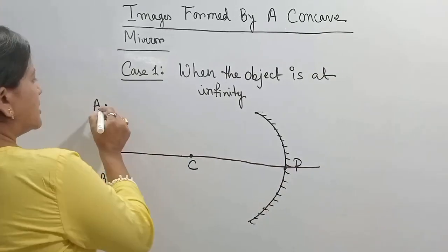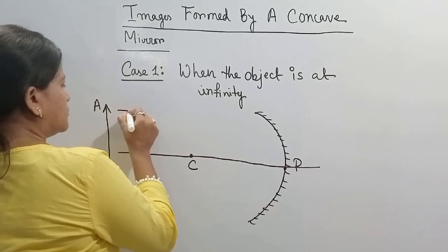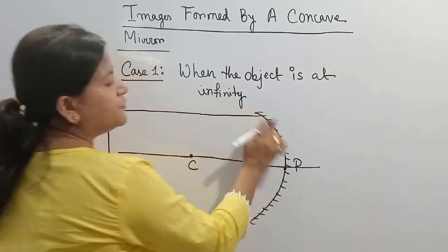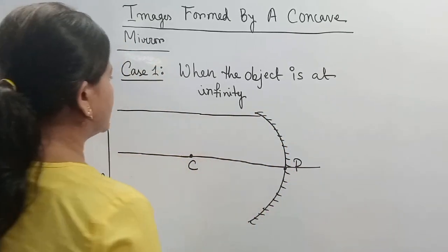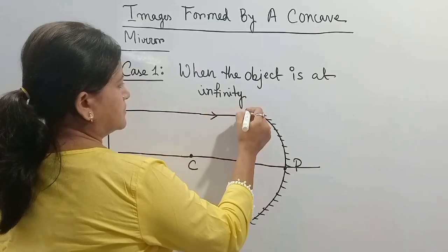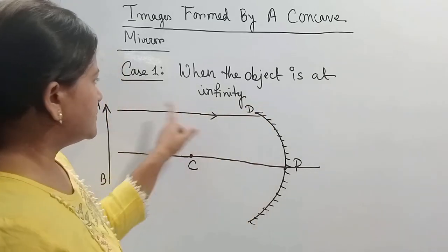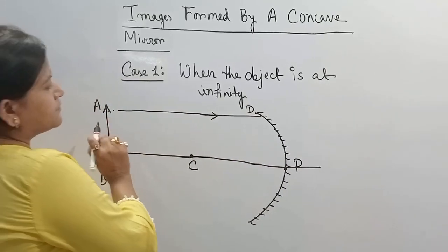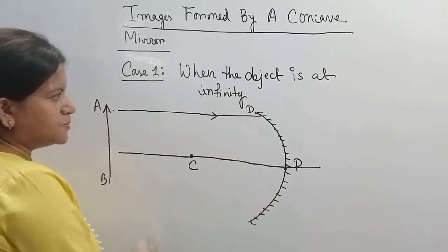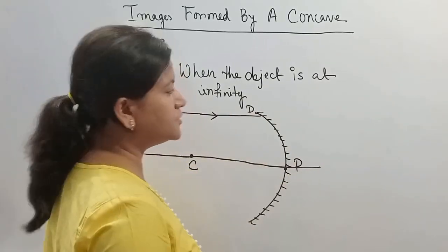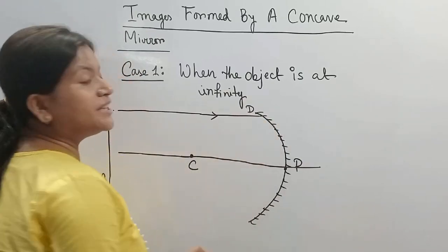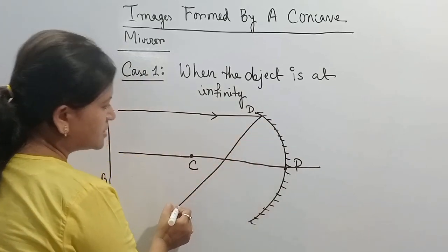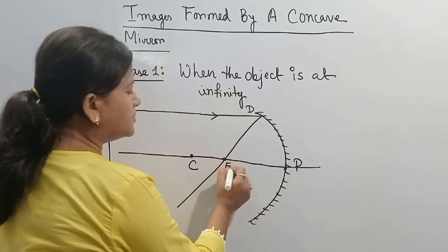Now a ray of light comes from point A, which is parallel to the principal axis, and falls on the reflective surface of the mirror at point D. From this point, it will get reflected and pass through the focus of the mirror.